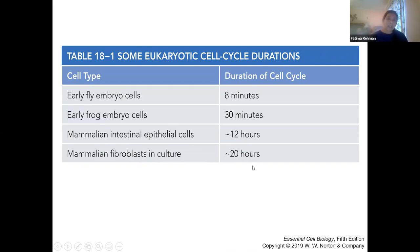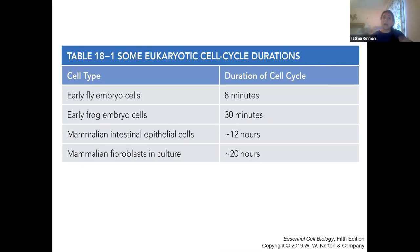Hepatocytes behave similarly in culture as they do inside the body. Liver cells from a younger individual will cycle faster, divide more before stopping, compared to hepatocytes from older individuals, which take longer to divide, stall and stop quicker because they reach senescence faster.